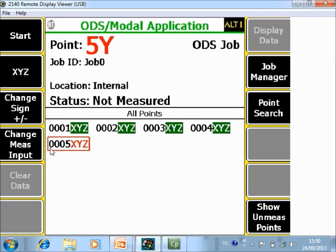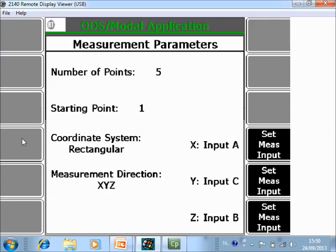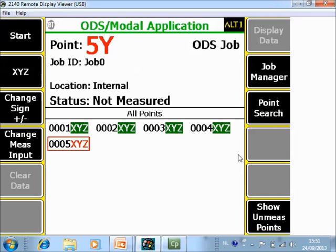On the data collector you have to go to change measurement input. Remember, the Y has to be your A, your X has to be your C, and your B has to be Z. So those two are now changed. On top of that I have to make the X negative. So I select X, make it negative, and now I can collect data.